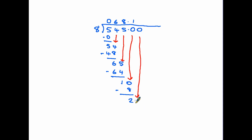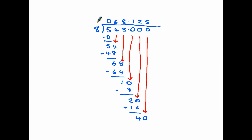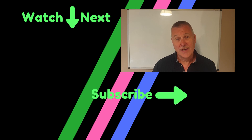We create a zero and bring it all the way down next to the one — ten divided by eight, only one eight. Eight times one is eight; take it away, two remaining. Create another zero, bring it down to the two — twenty divided by eight, two eights. Two times eight is sixteen; take that away, four remaining. One more zero, bring it down to the four — forty divided by eight, five eights. Eight times five is forty; take that away and we have zero. Our final answer is 68.125.